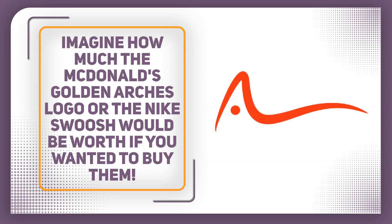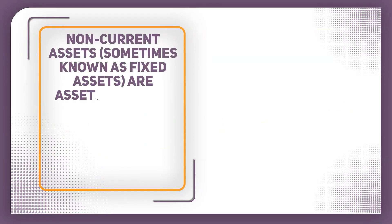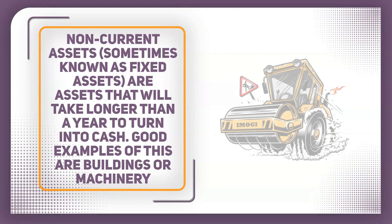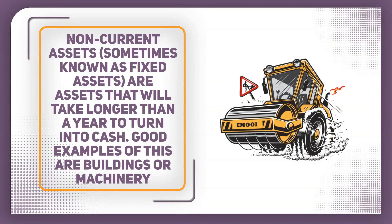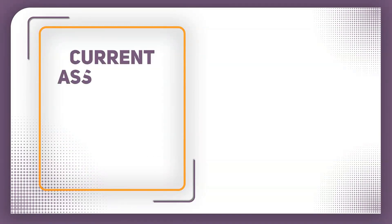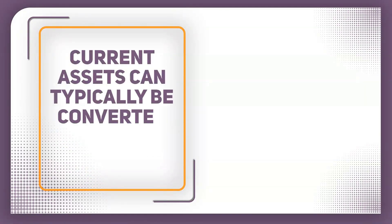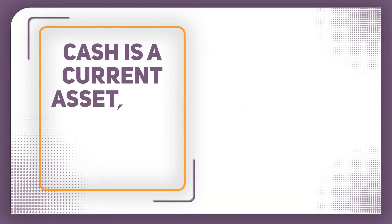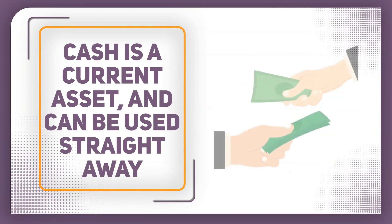Another way of looking at assets is to break them down into whether they can be quickly turned into cash or not. Non-current assets are assets that will take longer than a year to turn into cash. Good examples of this are buildings or machinery. Businesses normally hold onto these and use them to generate cash for much longer than a year. Current assets on the other hand can typically be converted into cash within a year. In fact cash itself, whether this is in a bank account or on a company's premises — in the safe or the tills for example — is a current asset and it can be used straight away by the business if needed.